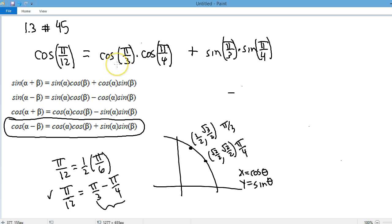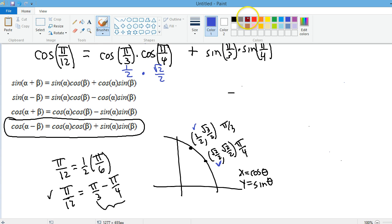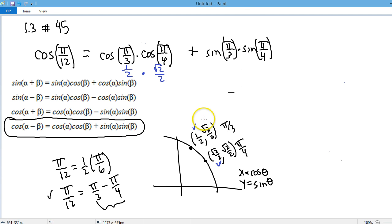The cosine of π over 3 is 1 half. The cosine of π over 4 is root 2 over 2. The sine of π over 3 is root 3 over 2. The sine of π over 4 is root 2 over 2. And we add these together.